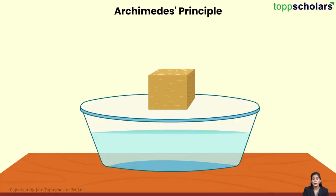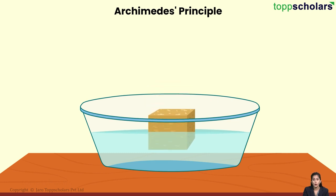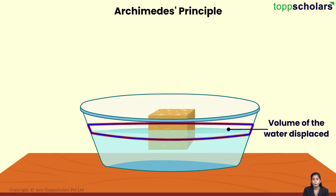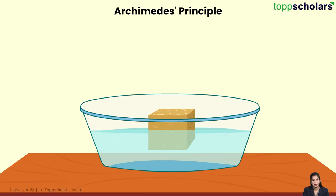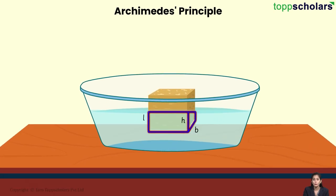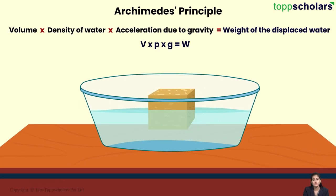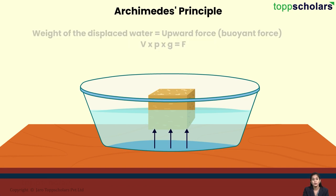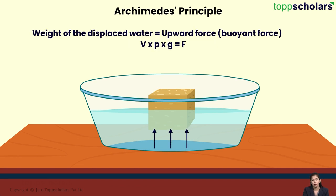So, in order to calculate the weight of the water displaced by the block, we need to measure the volume of the water displaced, or calculate the volume of the submerged part of the block mathematically. Then by multiplying that volume with the density of water, we get the weight of the displaced water. This weight of the displaced water is equal to the upward force, or the buoyant force, acting on the block.